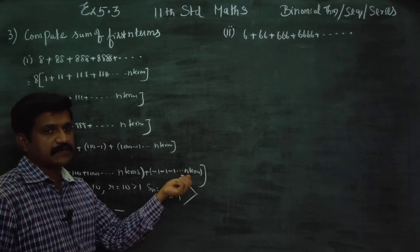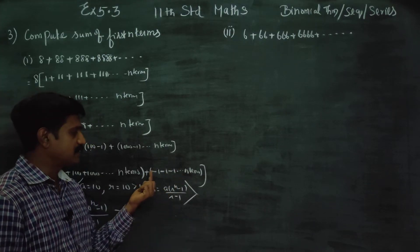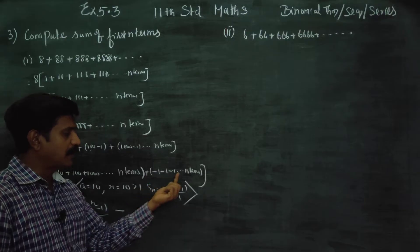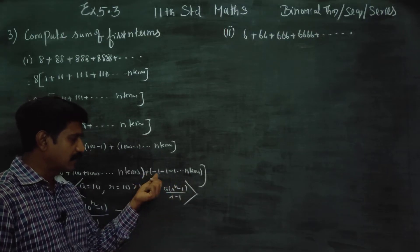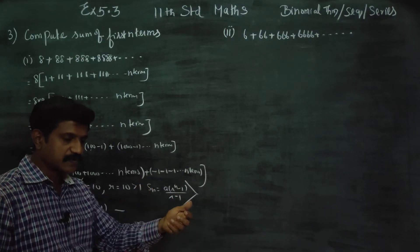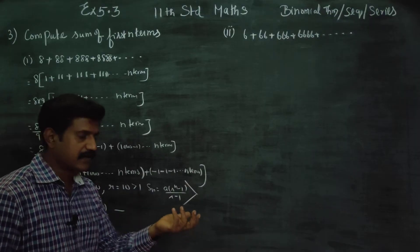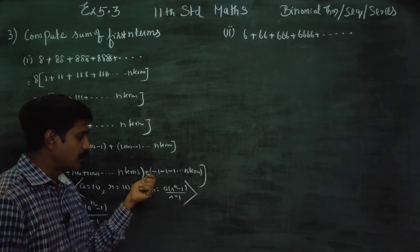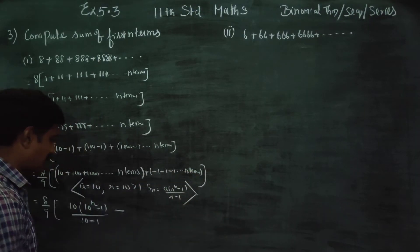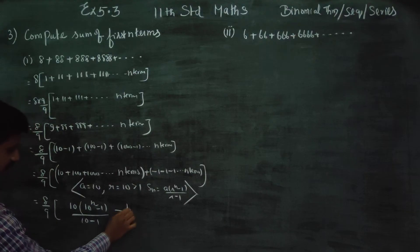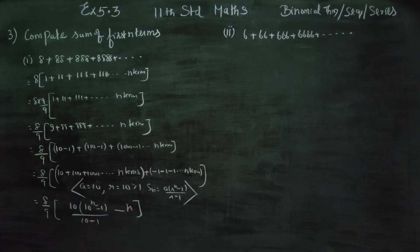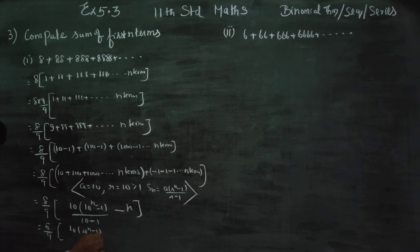We also subtract N terms (the minus 1 terms added N times gives minus N). So we have minus N on the other side. All the minus 1 terms contribute minus N. After simplification: 8 by 9 times 10 into 10 power N minus 1, divided by 9, minus N.